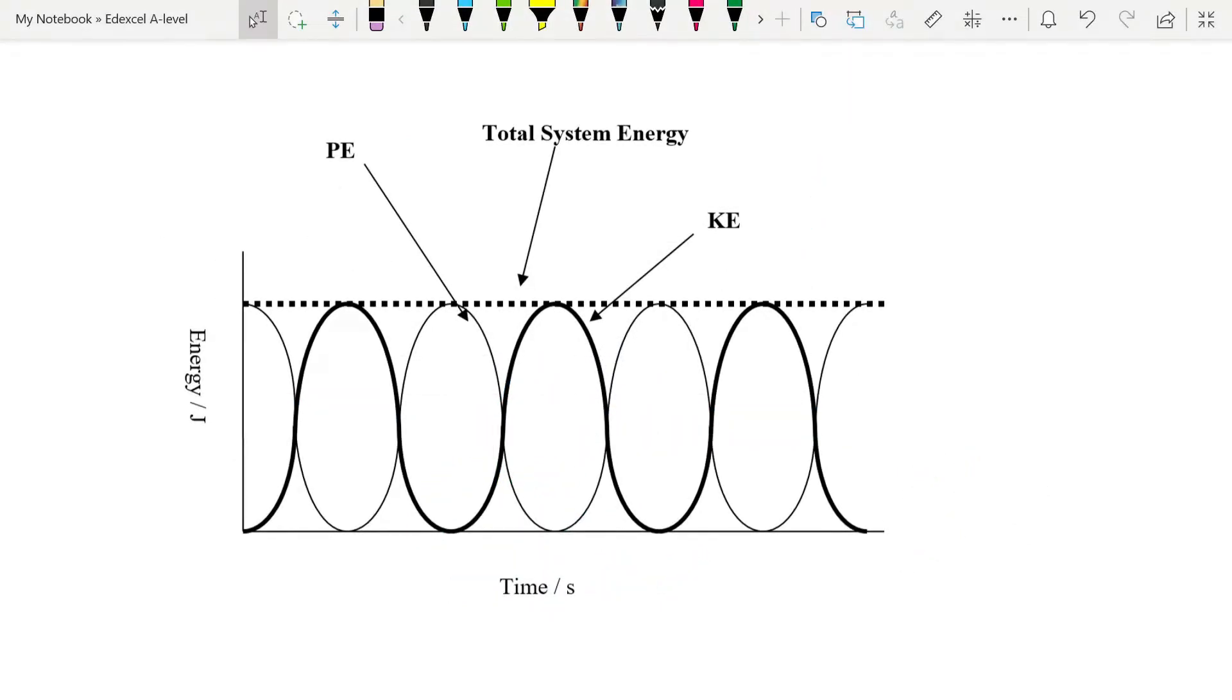If we wanted to graph the energy in the system, it would look something like this. We've got our two types of energy here, our kinetic energy as it passes through the center, and our potential energy. And you can see these are just a direct swap from one to the other as the trolley goes through its oscillation. And of course, this applies to any oscillator. The trolley is simply an example. Notice, of course, that the total system energy remains the same. This is the ideal situation. It is undamped oscillations.